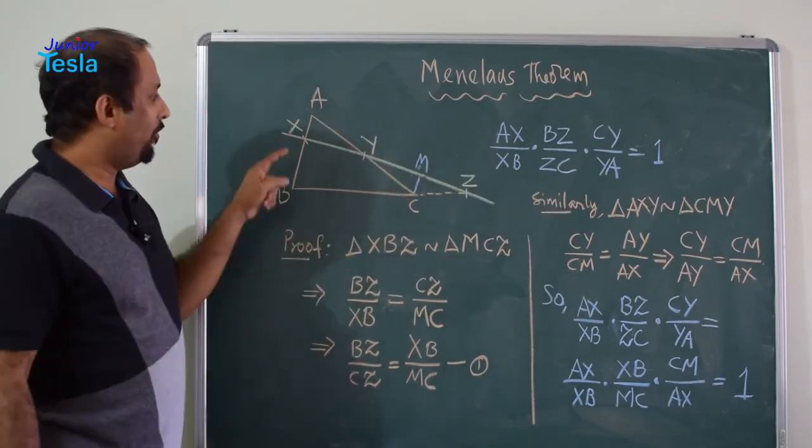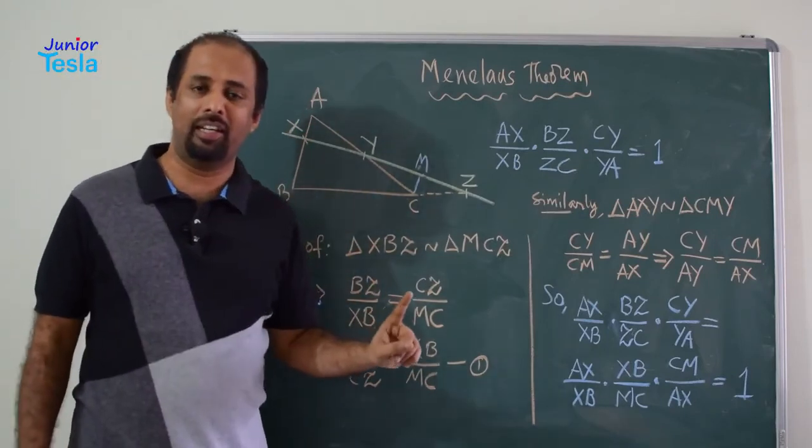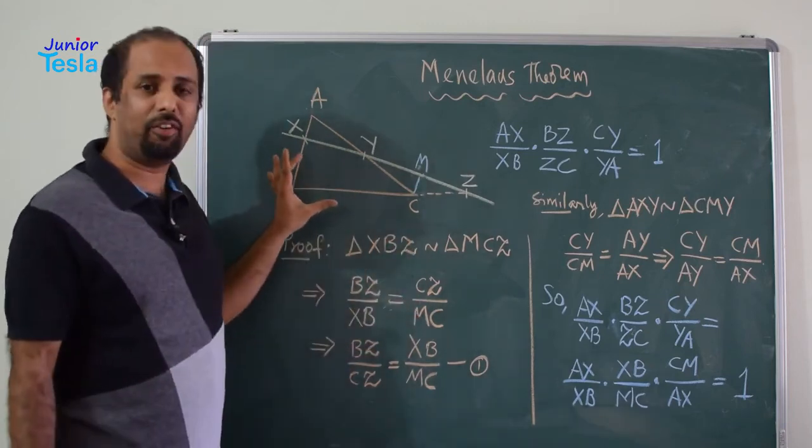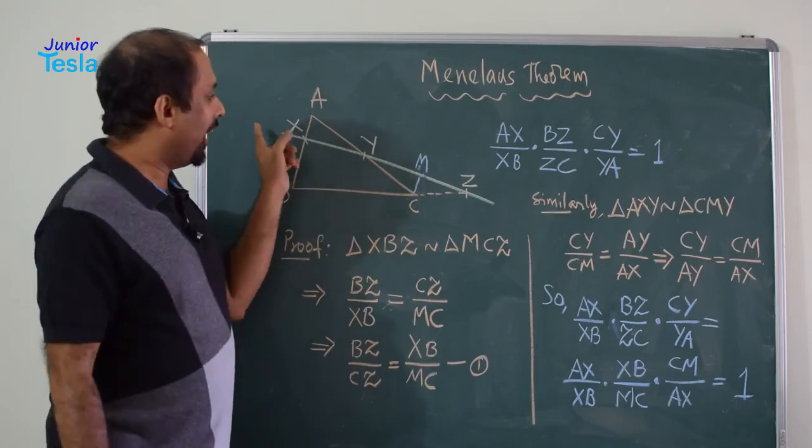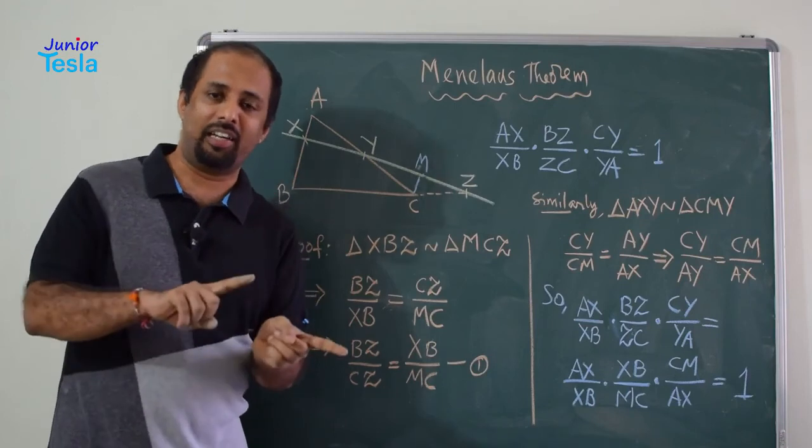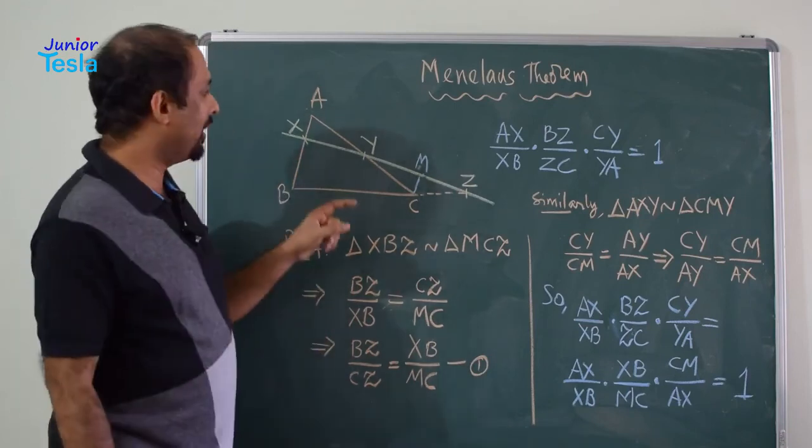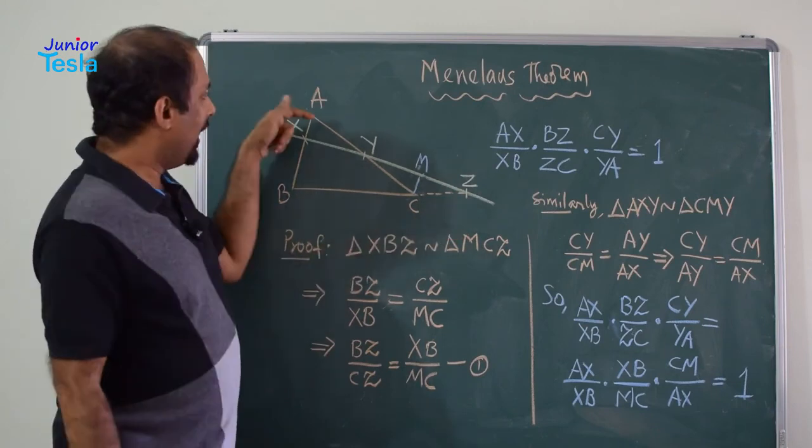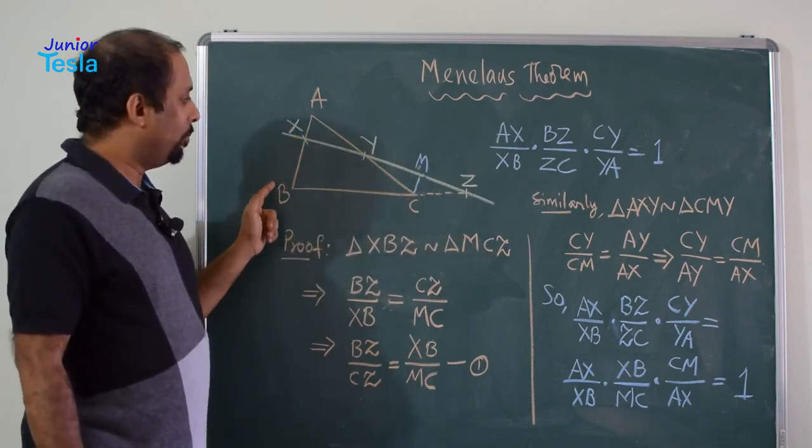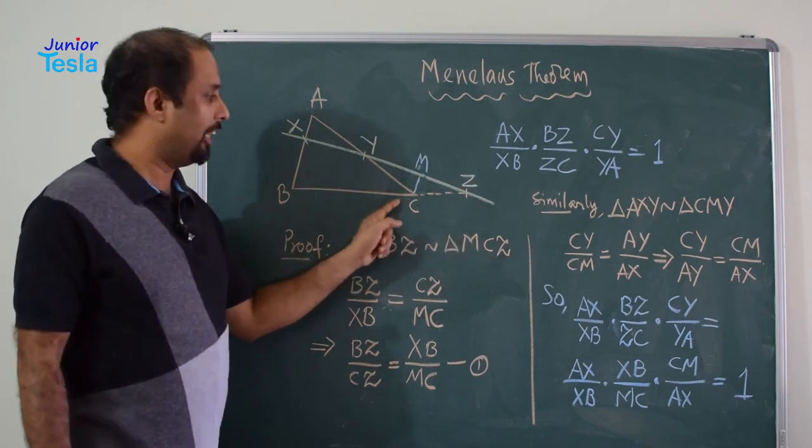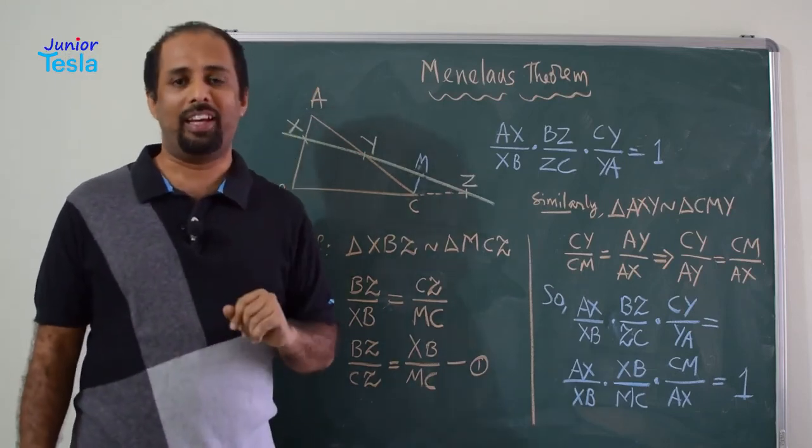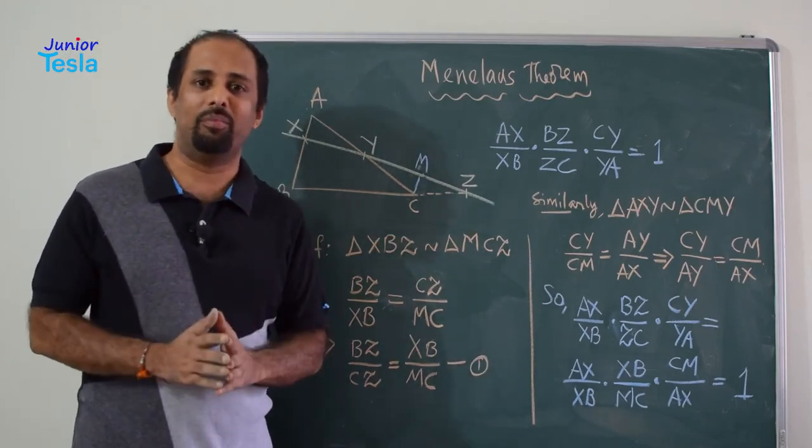So, remember, if you have taken a triangle, this need not be an equilateral triangle, this need not be isosceles triangle, this need not be a right triangle. Some scalene triangle, if you have taken one scalene triangle and drawn one line which is cutting all the three sides, two sides internally and one side externally, at three points X, Y, Z, then AX divided by XB into BZ divided by ZC into CY divided by YA is equal to 1. This is what Menelaus' theorem all about.